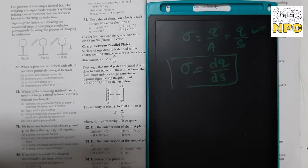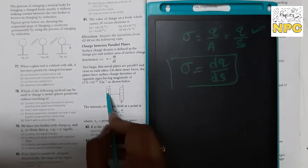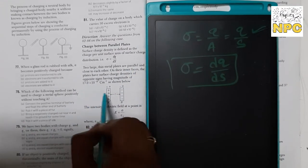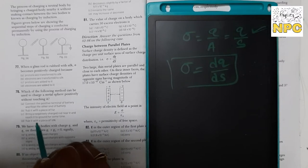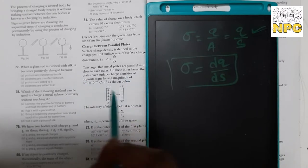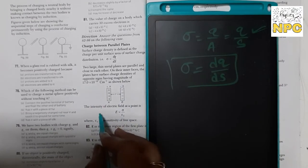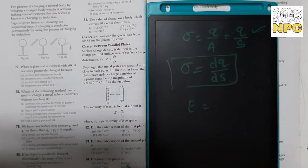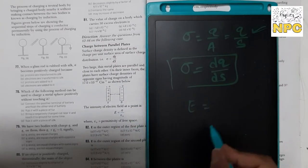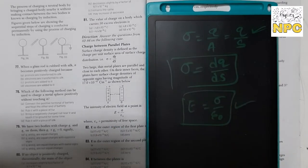The surface charge density on the plates is 17 × 10⁻²² C/m², as shown. The intensity of electric field for surface charge distribution is E = sigma / epsilon naught. This formula we use. So the first question will be: find E in the outer region of the first plate.